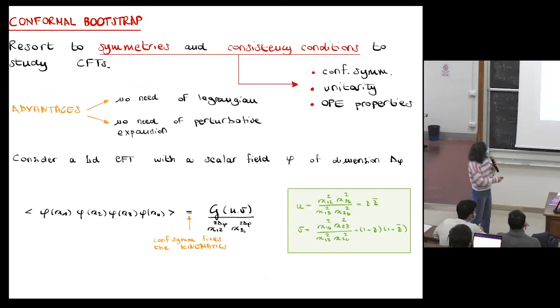Now I'm going to tell you what is the main idea of the conformal bootstrap, which is the starting point of our work. The idea of the conformal bootstrap is that one can just use symmetries and consistency conditions in order to study conformal field theories. The symmetries and consistency conditions we are looking at are, for example, conformal symmetry, unitarity, or some properties of the OPE, for example convergence and associativity. The advantage of this way of looking at things is that one does not need the Lagrangian or does not rely on any perturbative expansion.